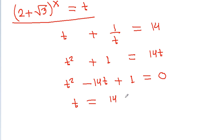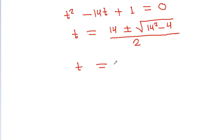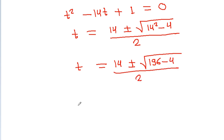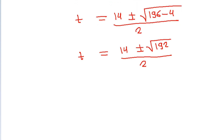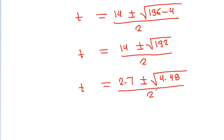Applying the quadratic formula, t = (14 ± √(196 + 4)) / 2 = (14 ± √200) / 2. Simplifying, t = 7 ± √48.